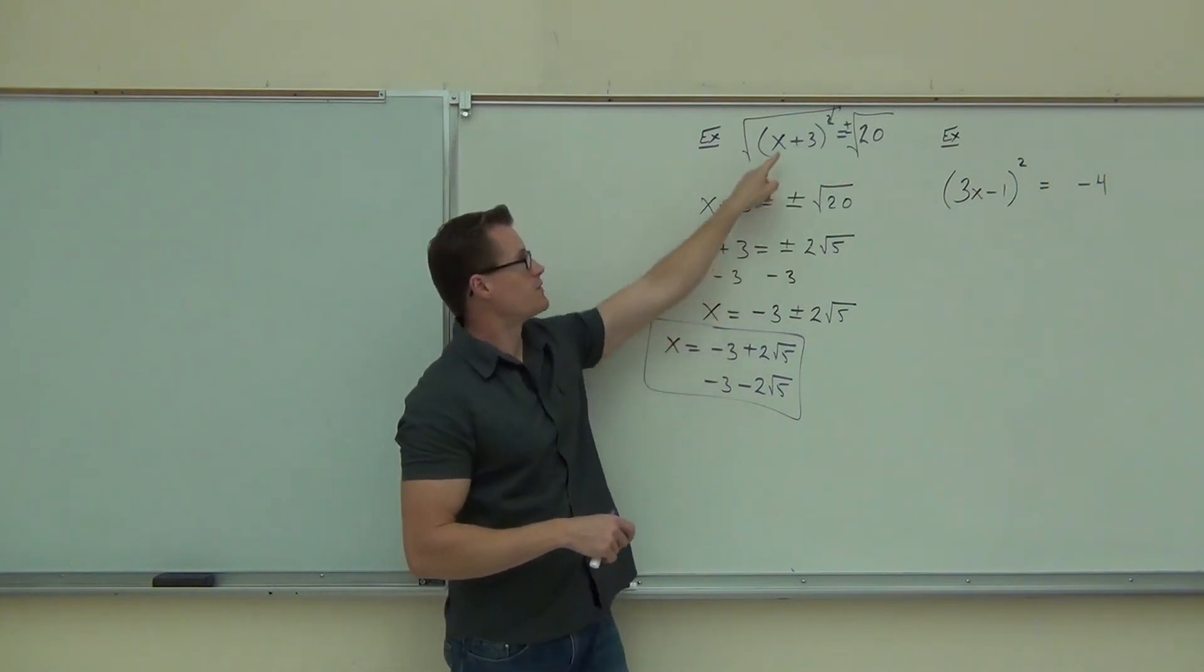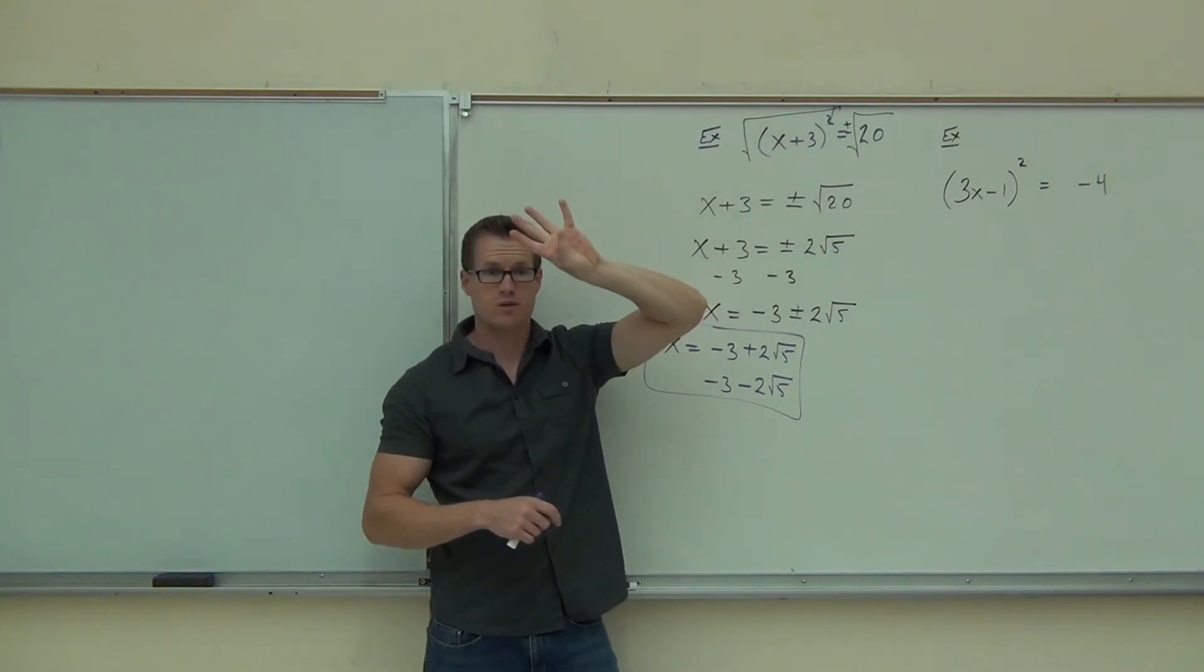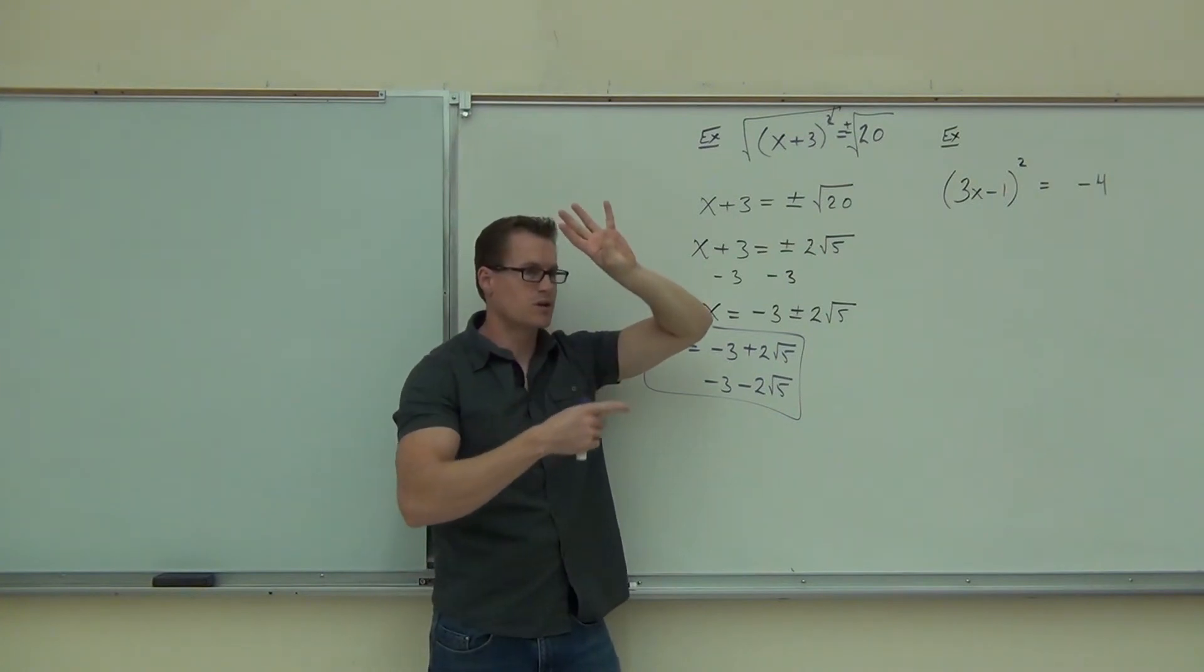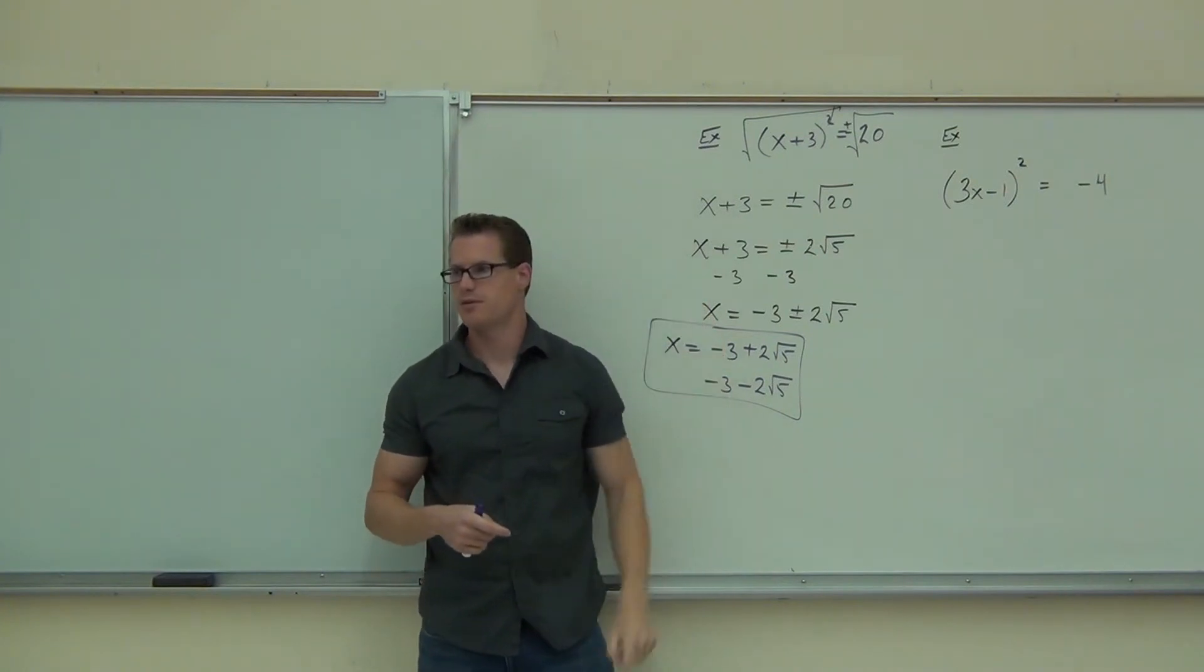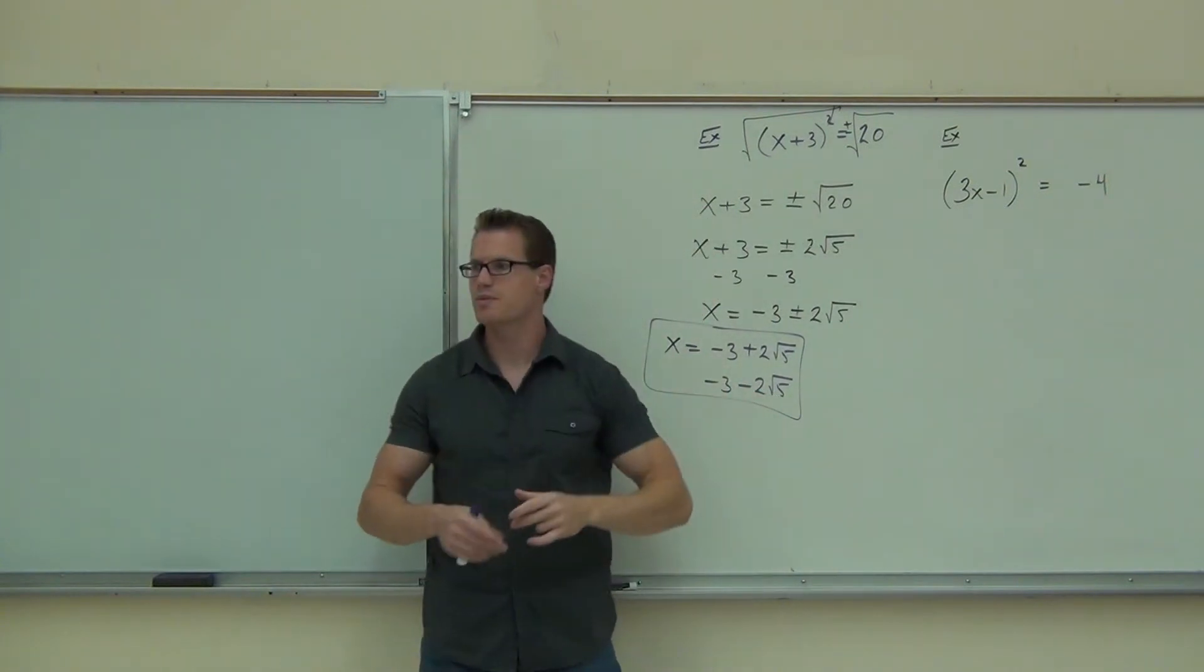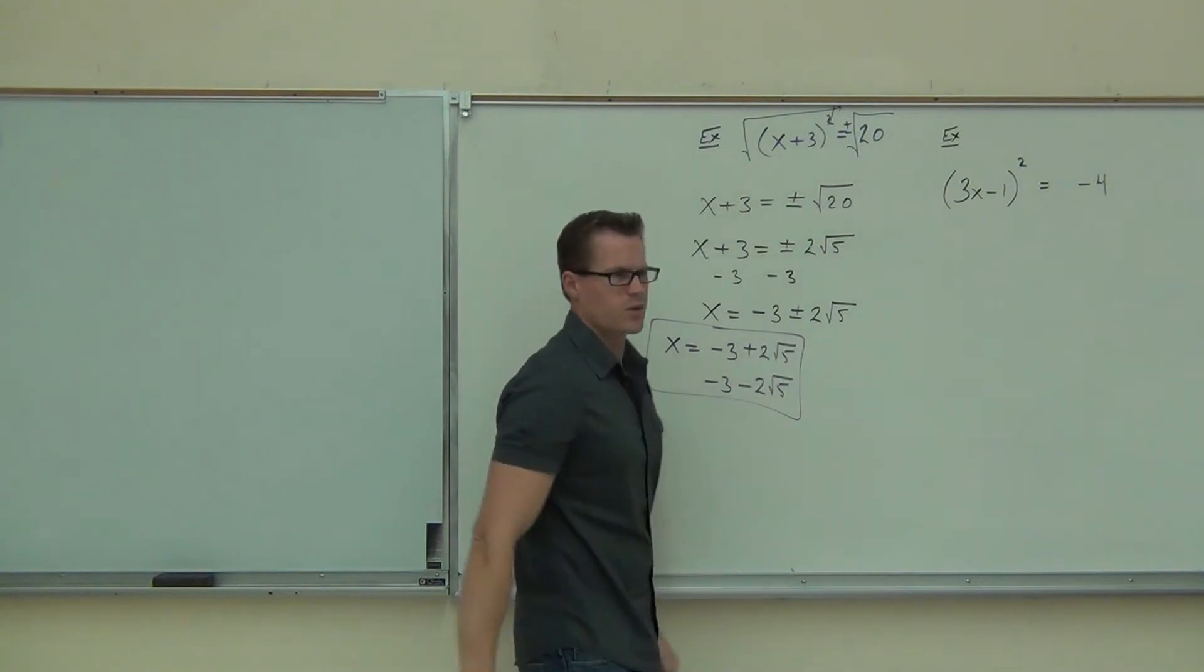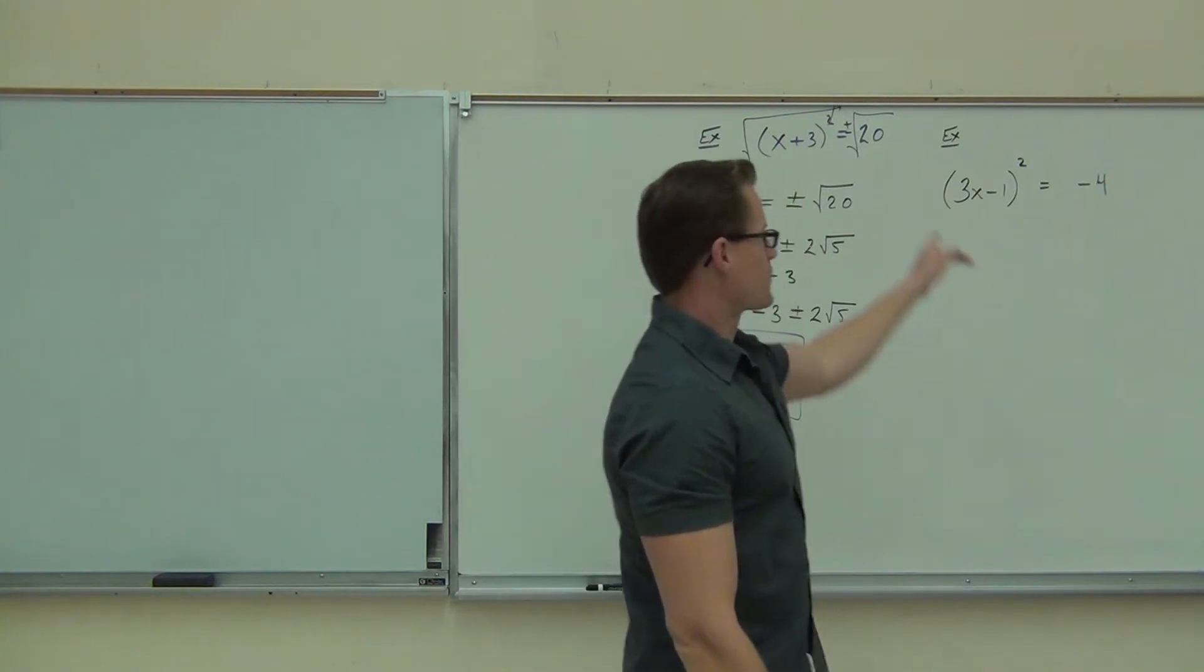It's going to get rid of that 3. You're going to have 2 root 5 squared. 2 root 5 squared, that would be 4. Square root squared is eliminating the square root. You get 4 times 5. What's 4 times 5? 20. It works. It's going to work here too because that negative, when you square it, becomes a positive. Interesting stuff here, right? This is a solution. Weird. Now let's check out the next one.